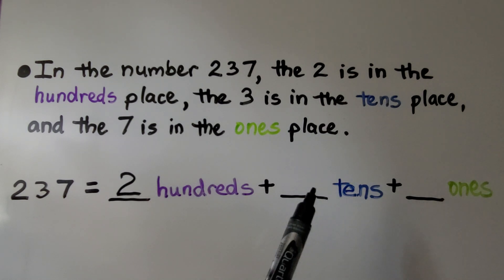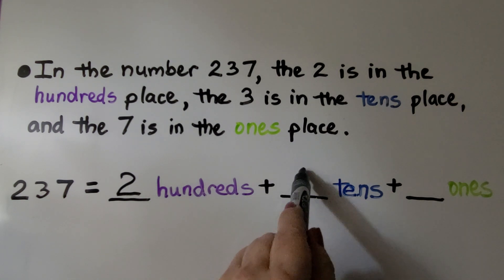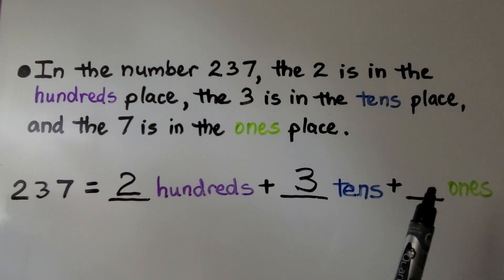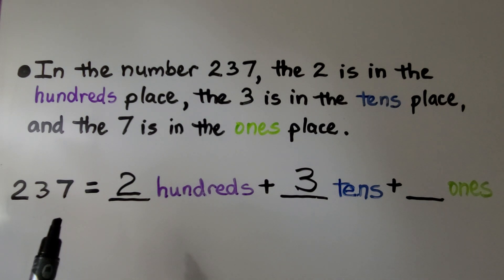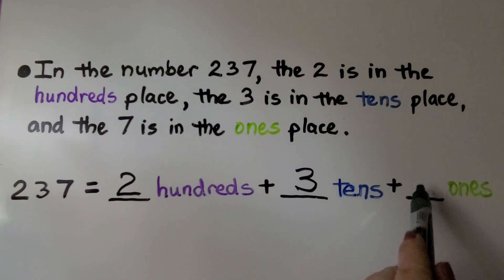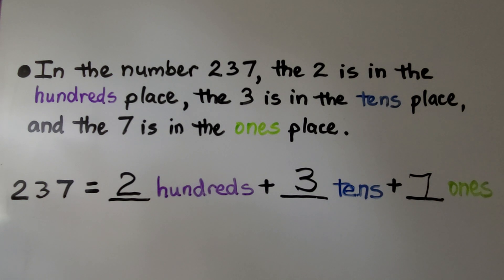How many tens are there? Can you look at this and tell how many tens there are? If you said three, you're right. And how many ones are there? Seven is in the ones place. So 237 is two hundreds plus three tens plus seven ones.